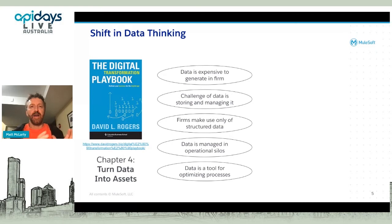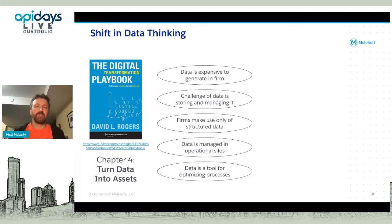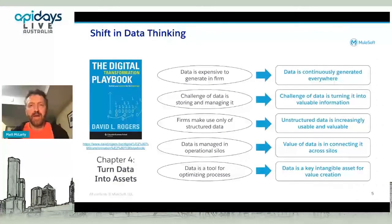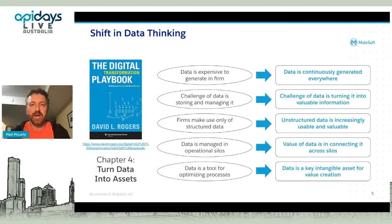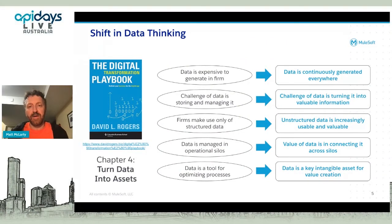There's now some really good information out there to use in your digital transformation journey. This book by David Rogers, a Columbia University professor, is extremely practical. He has a chapter on turning data into assets, and he starts by saying you have to shift the way you think about data. In IT terms, we've looked at data as something expensive — a cost item. You have to store it, manage it, with a lot of focus on data modeling, structuring, and siloing. But when you start to think about data as a capital asset, your whole mindset has to change.